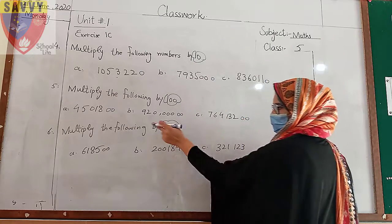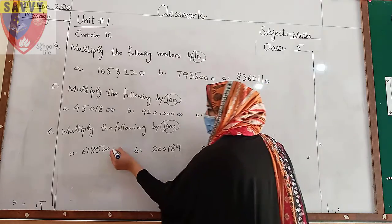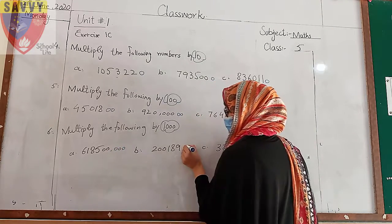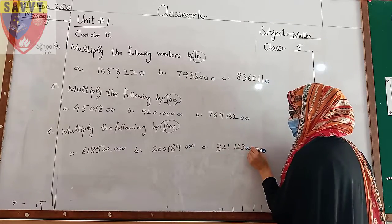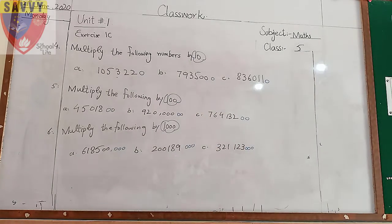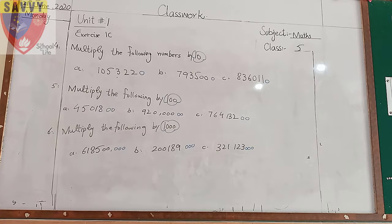When multiplying by 1000, you add 3 zeros — 1, 2, 3. So for questions 4, 5, and 6, you have to multiply by 10, 100, and 1000 respectively. You just have to add the corresponding number of zeros. That was easy to do.